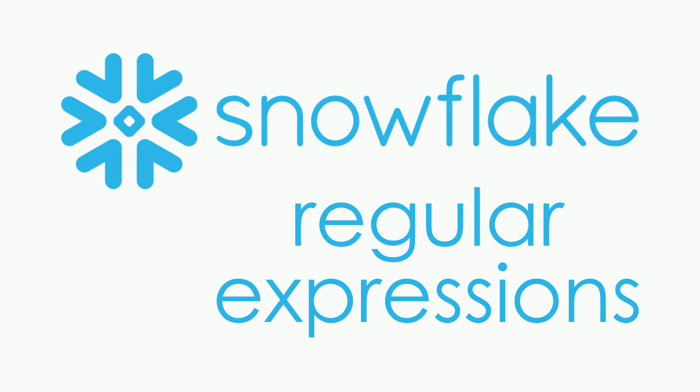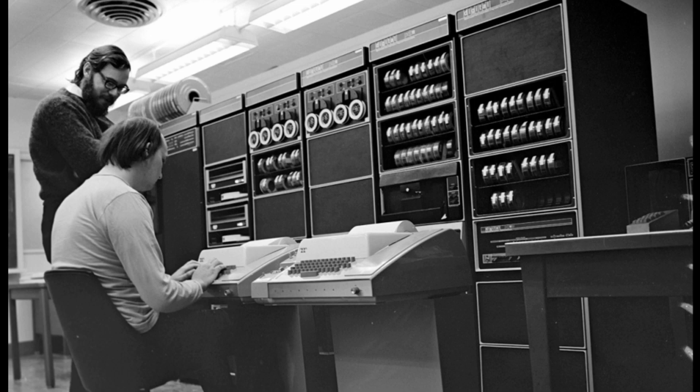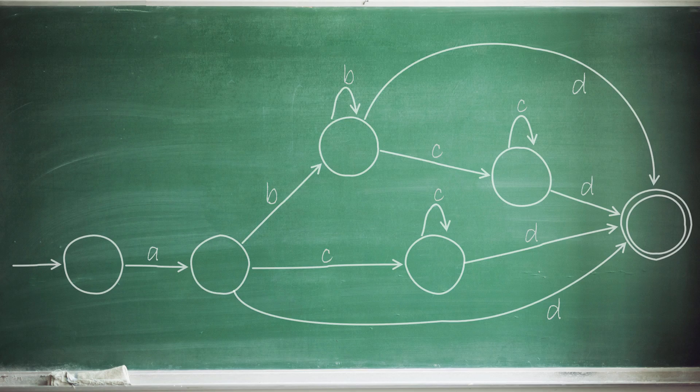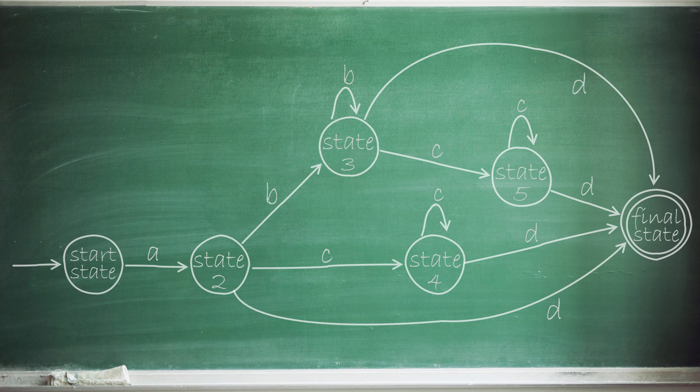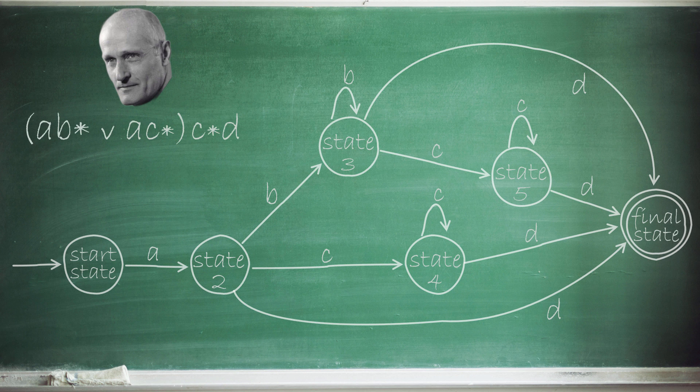Regular expressions were created long before we started using them with computers. As far back as the 1940s, people drew state diagrams to design low-memory systems — algorithms that transition from one state to another in response to some input. In 1951, along came a mathematician, Stephen Kleene, who wanted a notation that was easier to write down to describe the behavior of such systems.